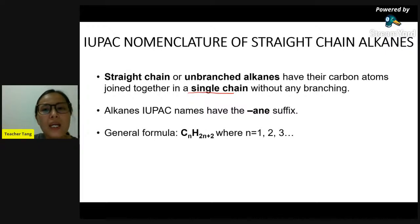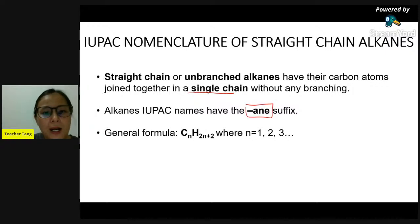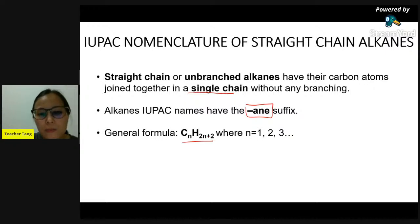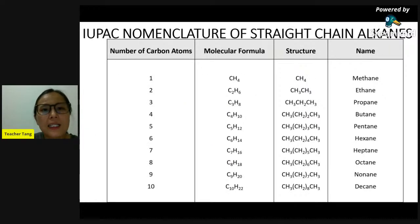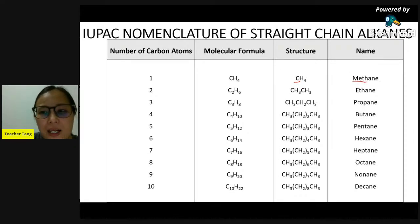How do we name straight chain alkane? We just need to add '-ane' at the back of the name. For alkane the general formula is CₙH₂ₙ₊₂. If it consists of one carbon, one carbon is 'meth' - add '-ane' at the back, so methane. Two carbon is 'eth' - add '-ane', so ethane. Three carbon is 'prop' - add '-ane', so propane.